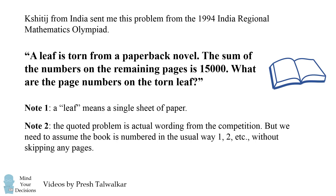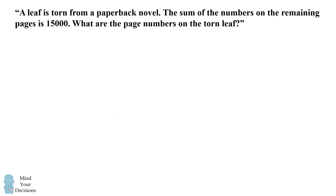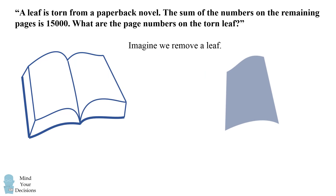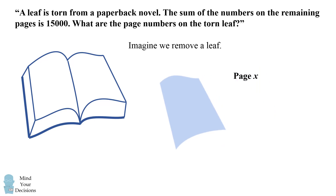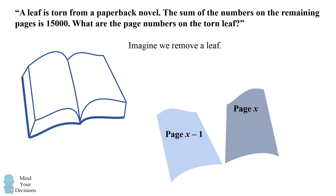Give this problem a try, and when you're ready, keep watching the video for a solution. So what happens if we remove a leaf from the book? Let's imagine we rip this page from the book. Well, this page would have a number of x. Now what would be on the opposite side of this leaf? We would have another page number, say x minus 1. In other words, when we remove a leaf from the book, we're removing two sequential pages — pages numbered x and x minus 1.